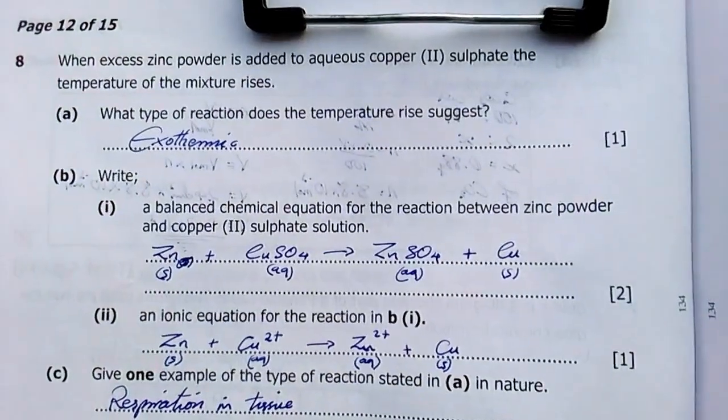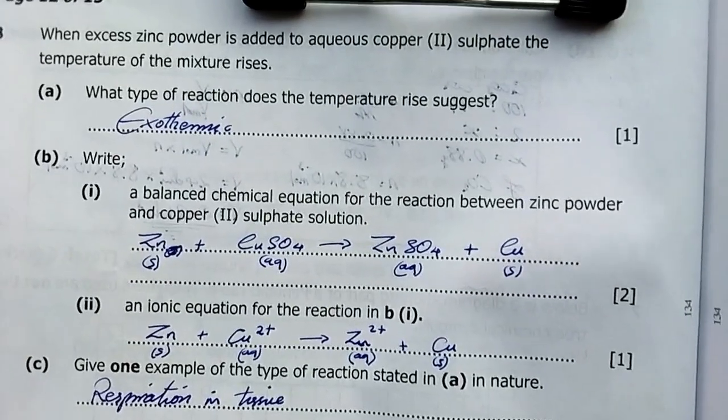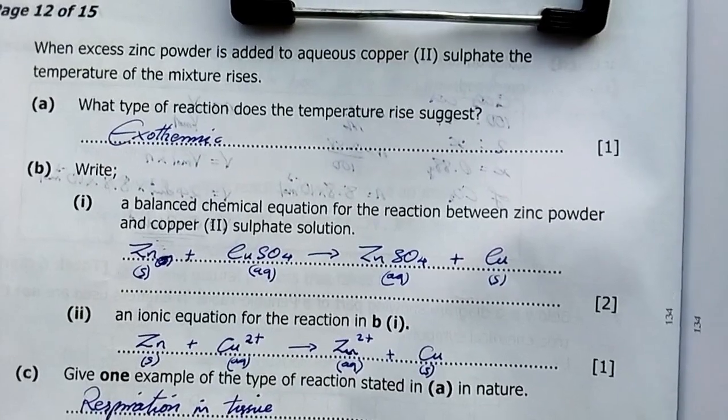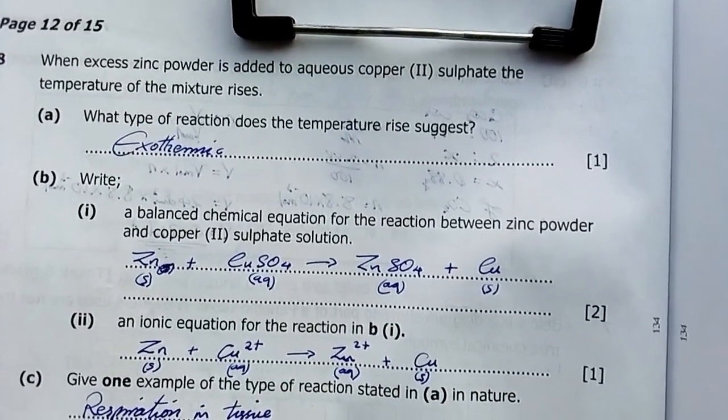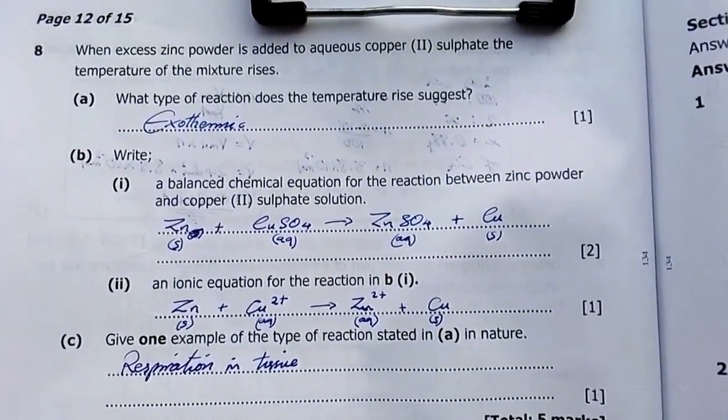Question 8: When excess zinc powder is added to aqueous copper sulfate, the temperature of the mixture rises. What type of reaction does the temperature rise suggest? Exothermic.